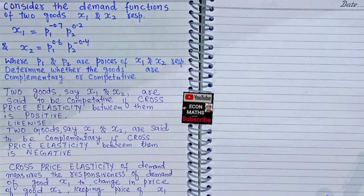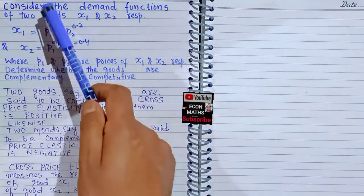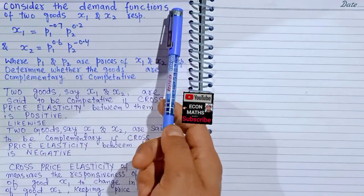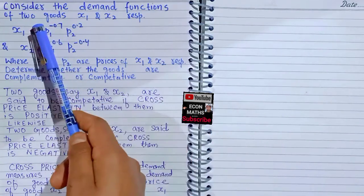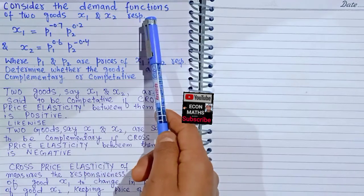In this video we will learn how to find out whether two goods are competitive or complementary to each other. The question is: consider the demand functions of two goods x1 and x2 respectively.